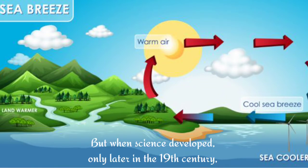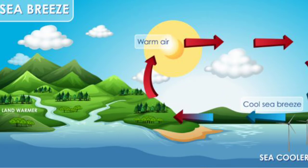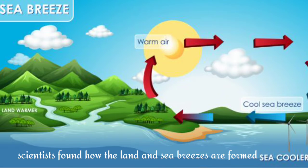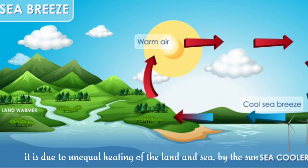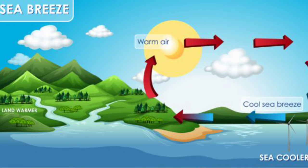But when science developed, only later in the 19th century, scientists found how the land and sea breezes are formed. It is due to unequal heating of the land and the sea by the sun.